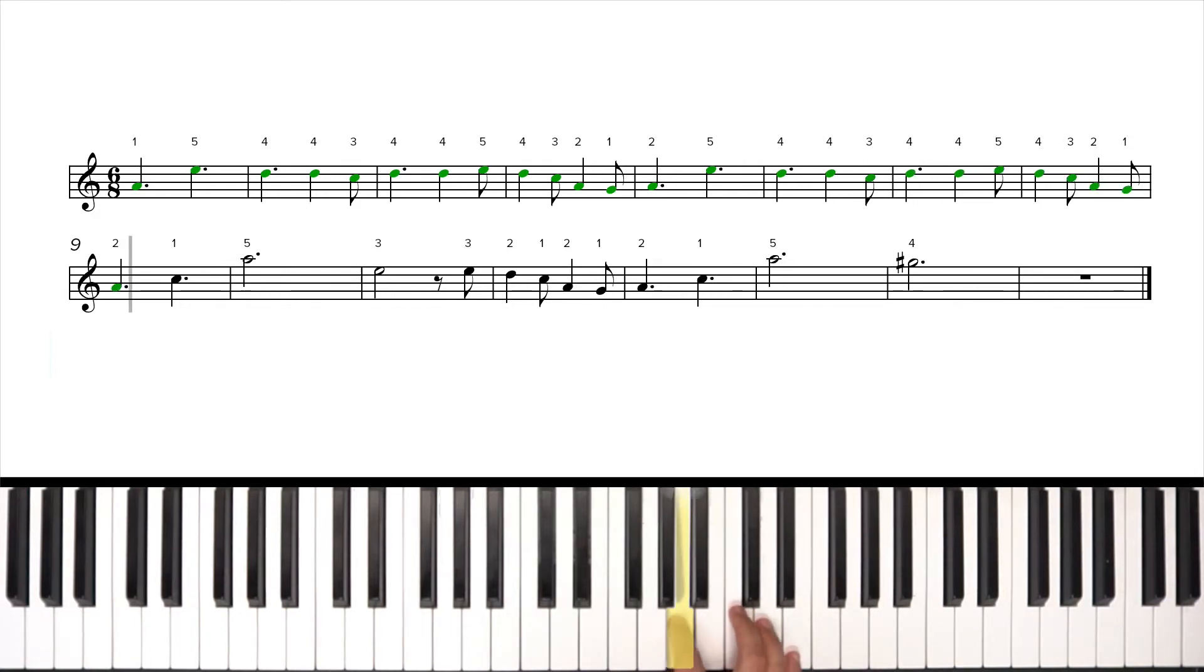Next line. Thumb under up to A. Over and thumb back under again. Here we go. So pause, rewind, and play that back with me at the slow tempo as many times as you need.